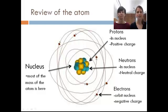And then hanging out outside of the nucleus are the electrons, and they're swirling around rapidly all the time, and they have a negative charge.